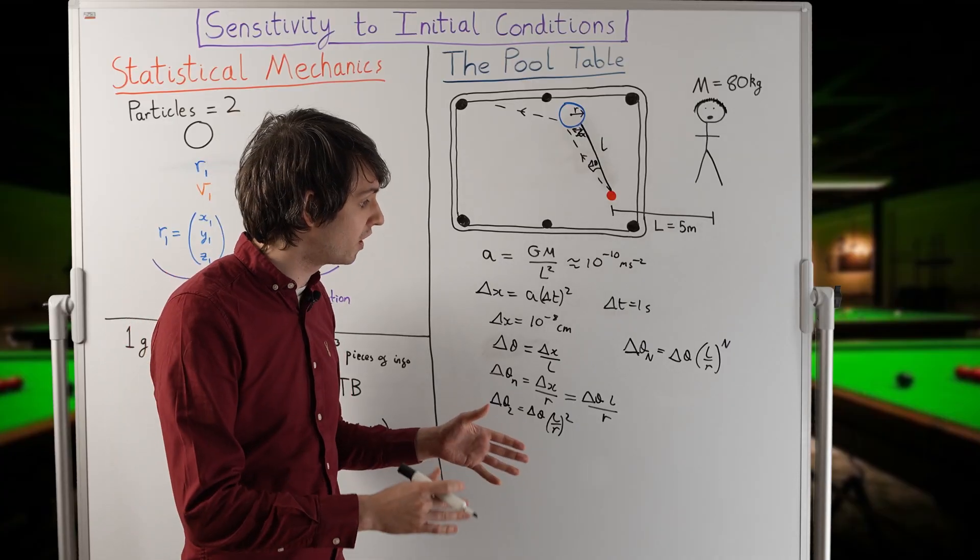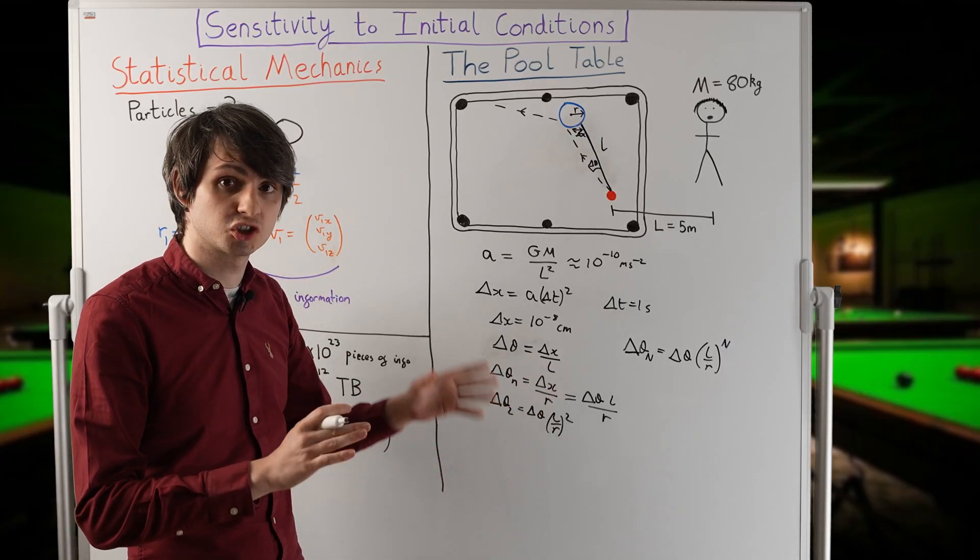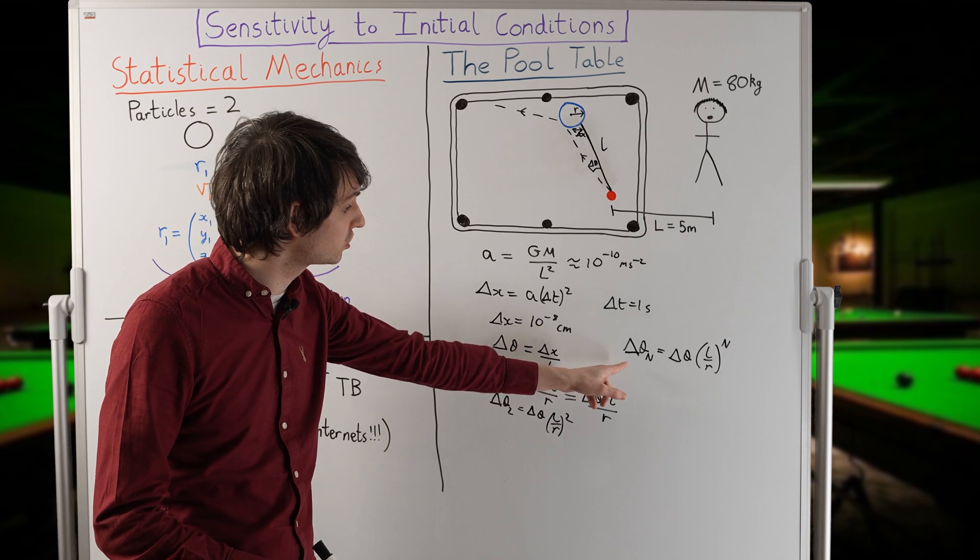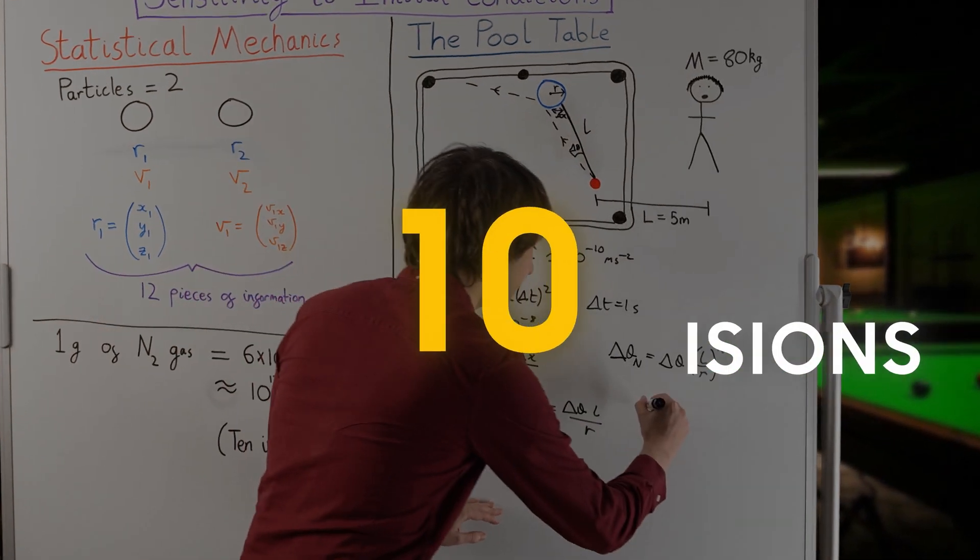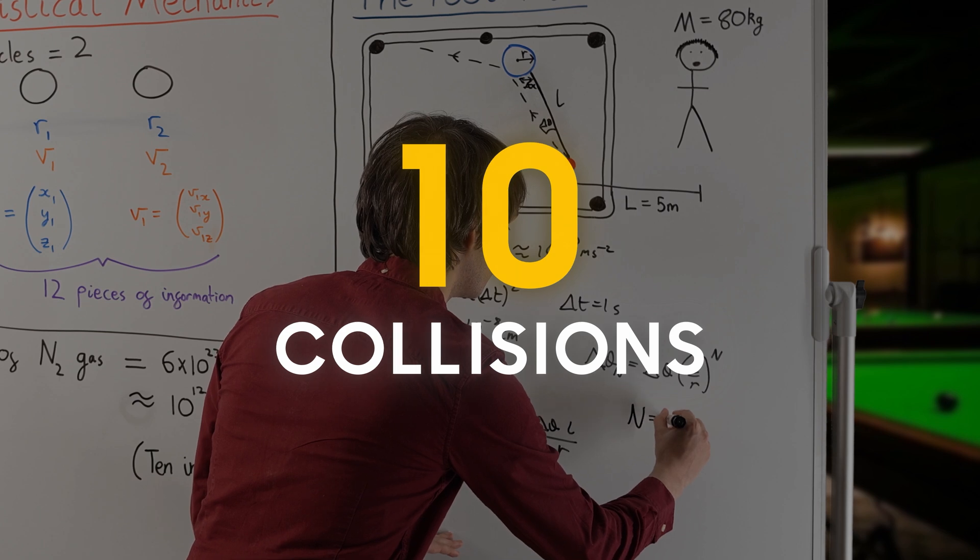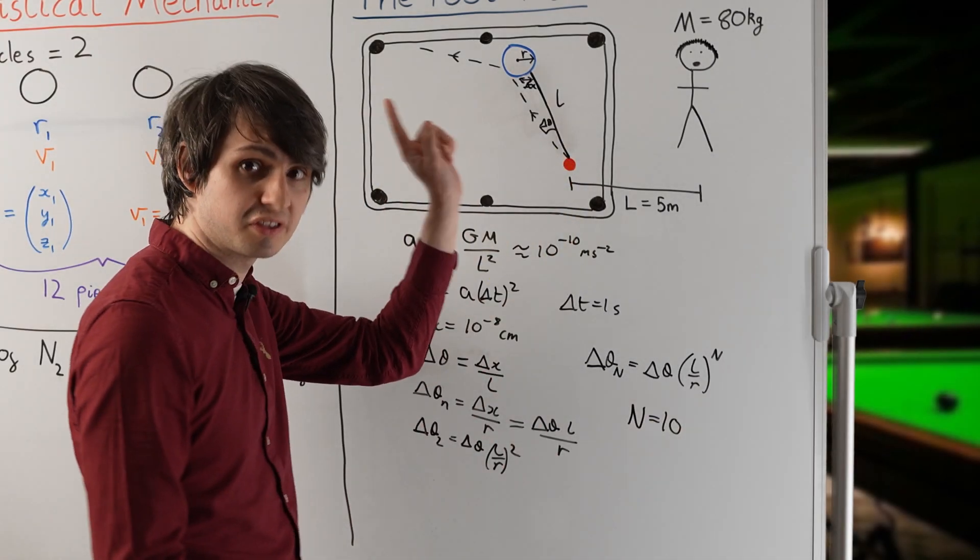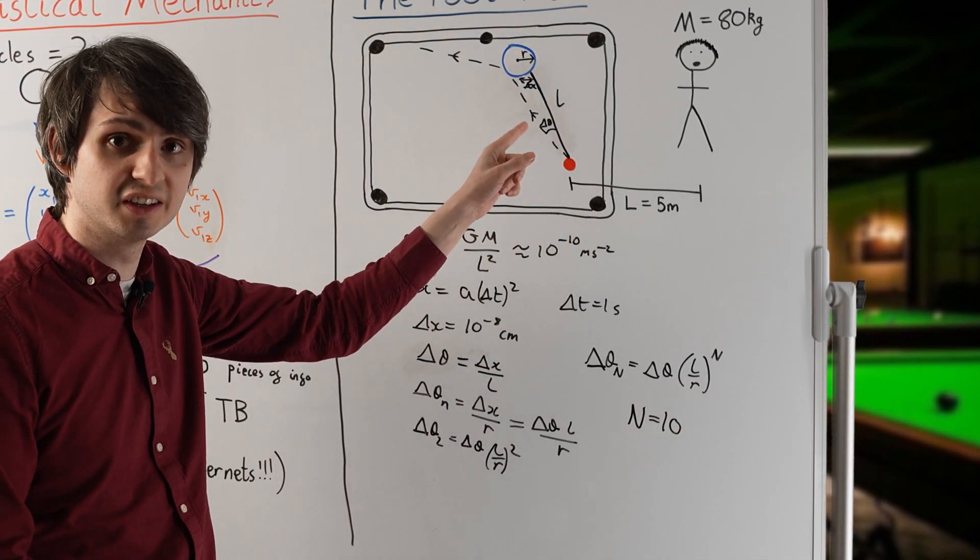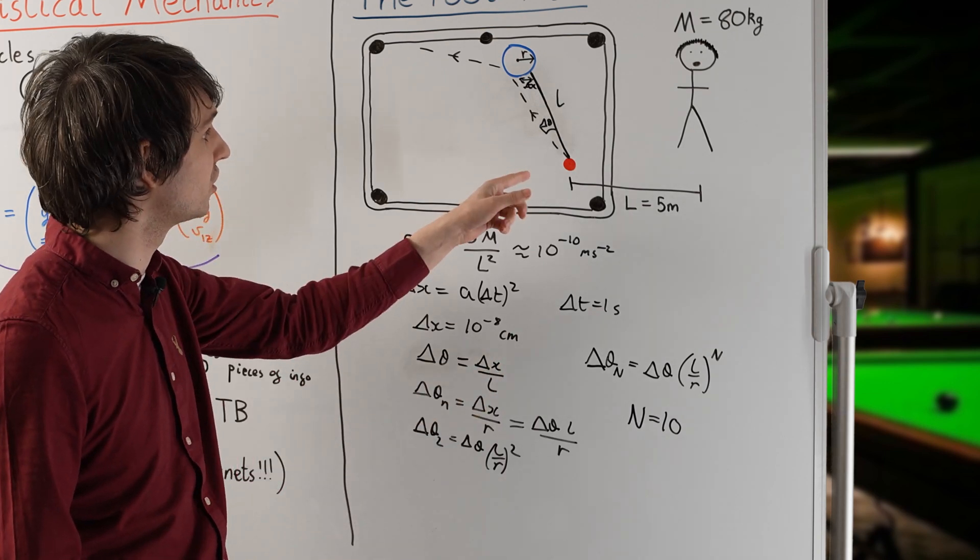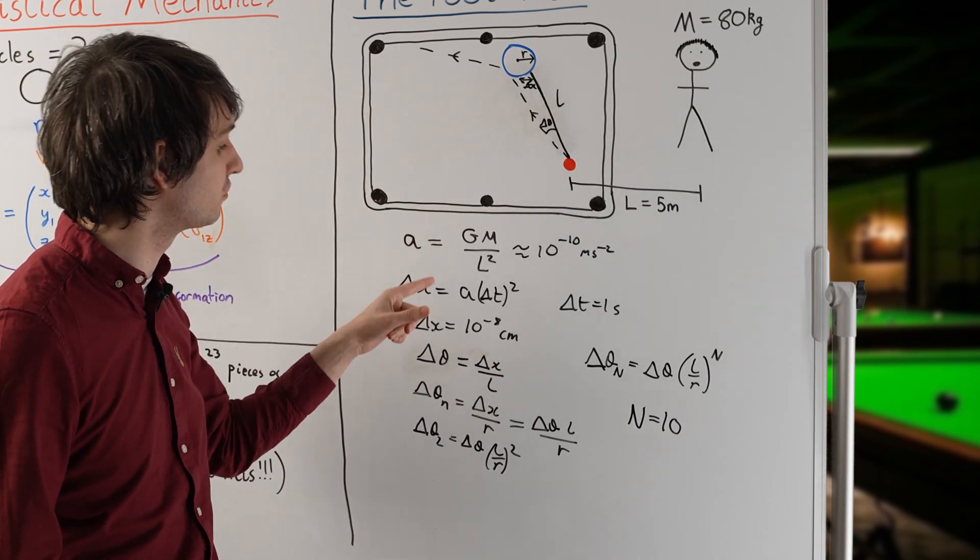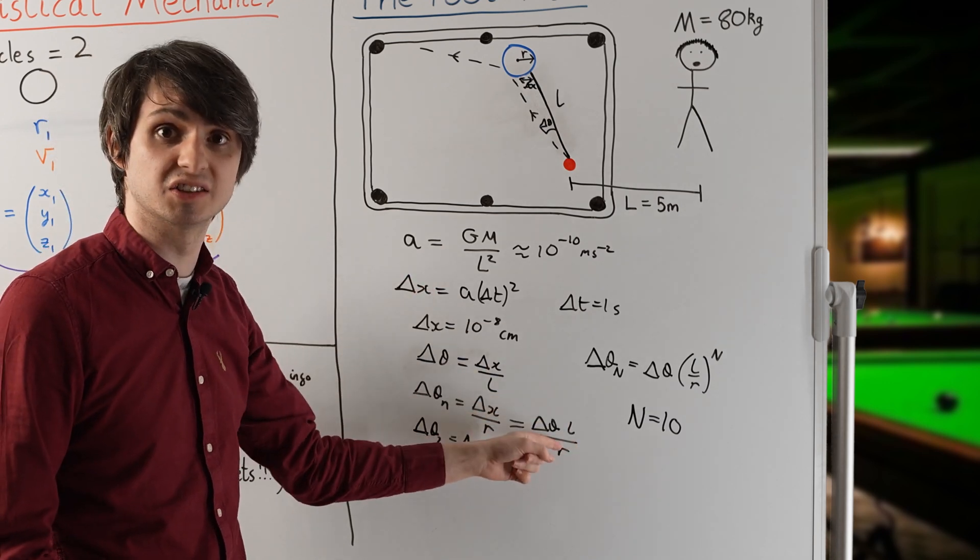It doesn't require very difficult maths at this point to show that in order to end up with a sizable angular deflection, you only need around 10 collisions to occur. In other words, despite your pathetic gravitational attraction, if you just stand in a room, you will completely alter the trajectories of pool balls bouncing on a surface within about 10 collisions.